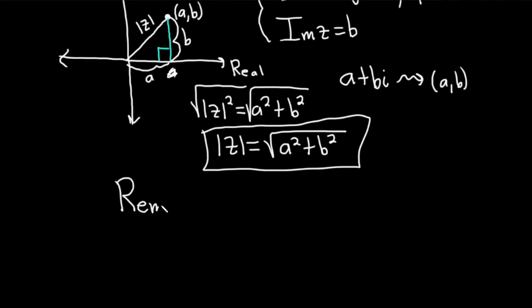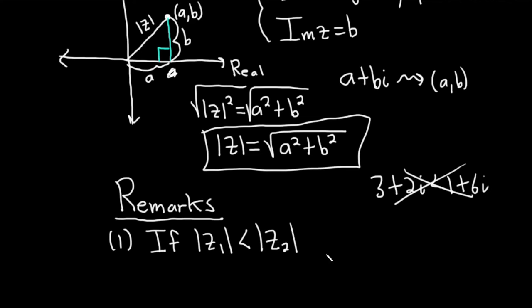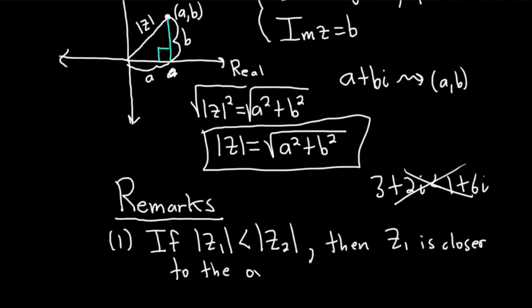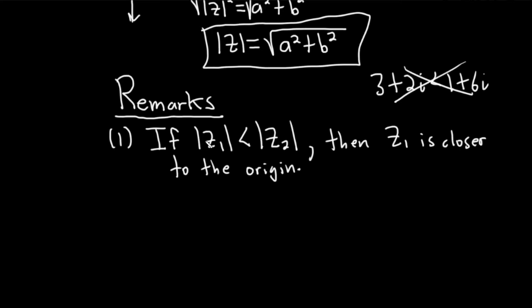A couple of remarks about the modulus. First, a remark: you can't really compare complex numbers — you can't say 3 plus 2i is less than 1 plus 6i; there's no ordering like that in the complex number system. But you can do that with moduluses. So if the modulus of some complex number z₁ is less than the modulus of another complex number z₂, then z₁ is closer to the origin. Because the modulus of a complex number is the distance between that complex number and the origin in the complex plane, if the modulus of z₁ is smaller than the modulus of z₂, then z₁ is closer to the origin than z₂.